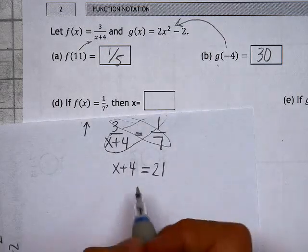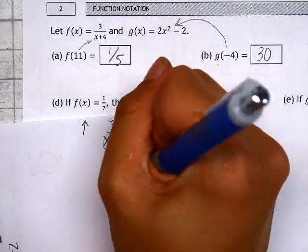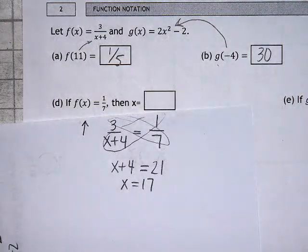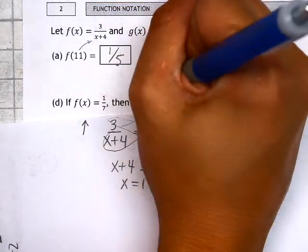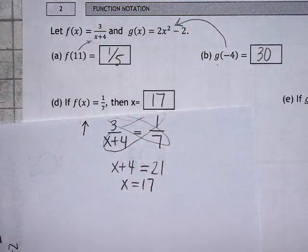If we just solve that equation by subtracting 4 on both sides, we get x equals 17. And sure enough, 17 must have been the x we needed to pick.